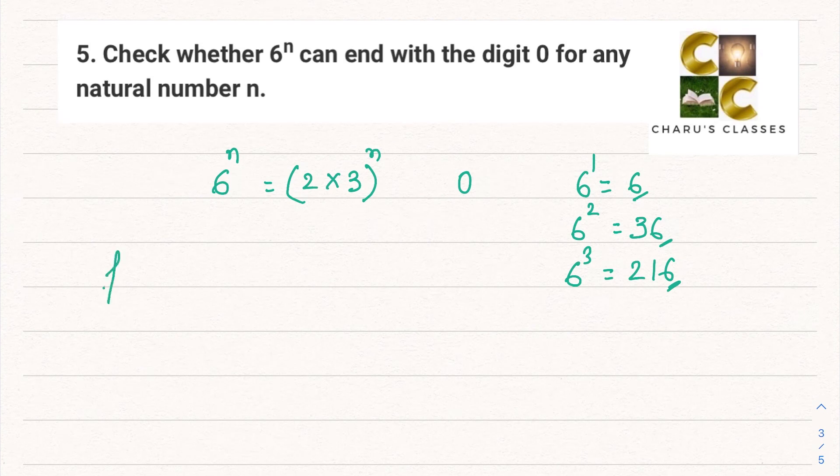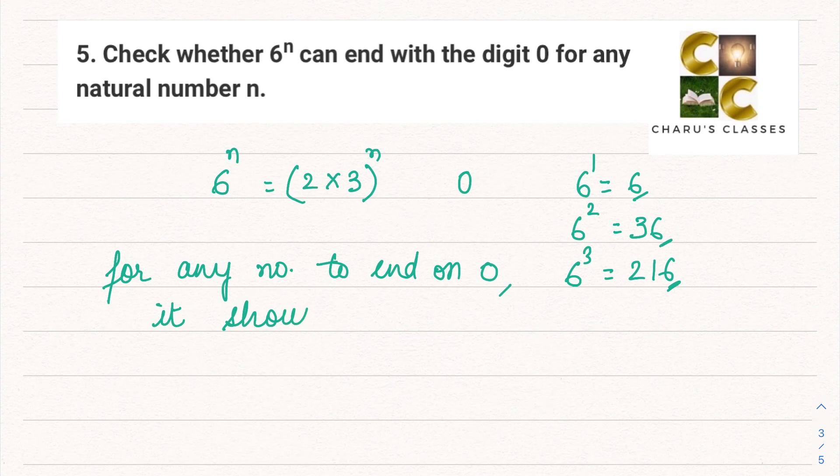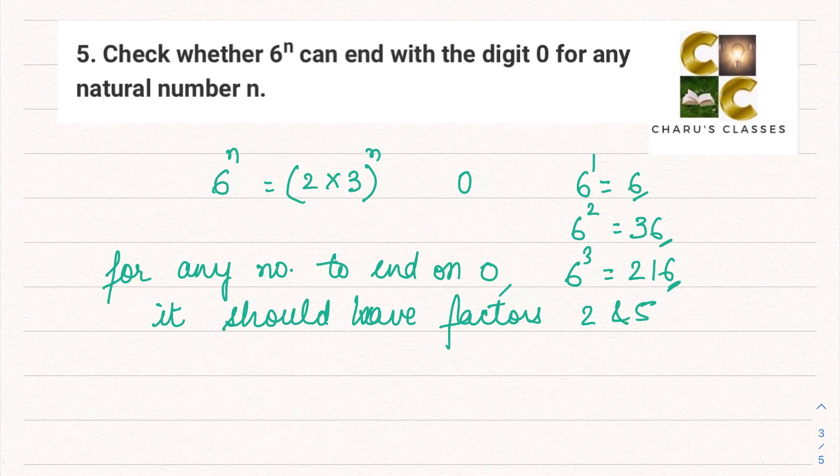Now for any number to end on 0, it should have factors 2 and 5. Why 2 and 5? Because 2 × 5 is 10. So if any number ends on 0, its factors automatically must include 2 and 5.